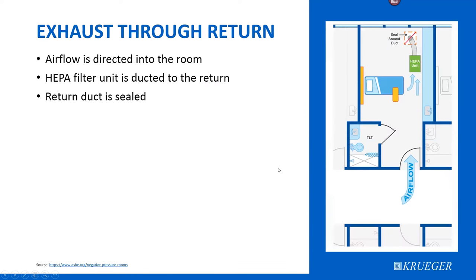You can also exhaust directly through the existing return structure in the room. The reverse flow HEPA unit ducts directly up into the return structure. You want to seal around the duct — not just place the duct up to the return grille — creating a tight connection so that the duct penetrates and provides exhaust air up into that structure while pulling airflow into the room.